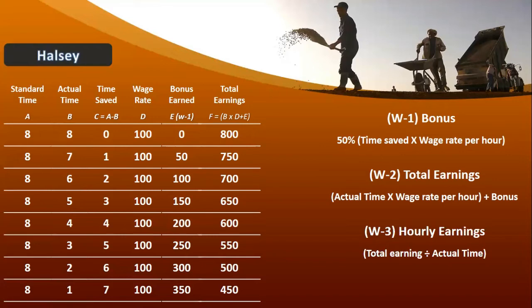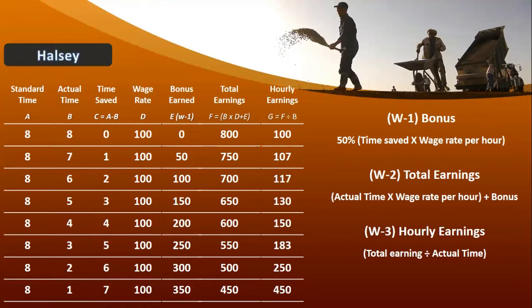Third: Hourly Earning. Hourly earning = total earning divided by actual time. Gradually aapke paas earning increase ho rahi hai. First condition mein 100 rupees per hour aa rahe hain — 100, 107, 117, and so on — gradually aapke paas suddenly increase aa rahe hain.